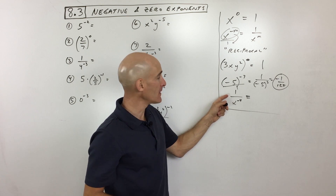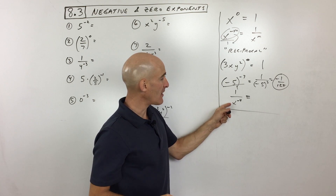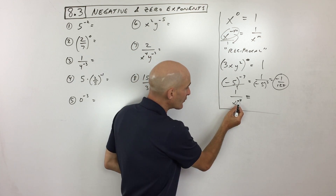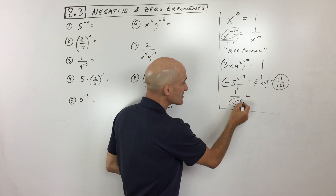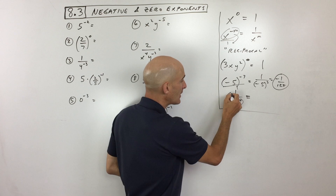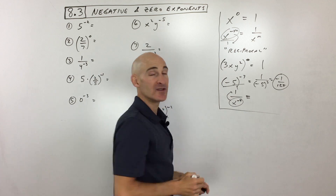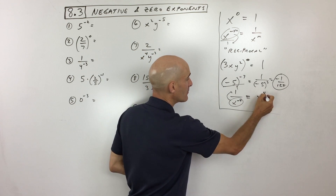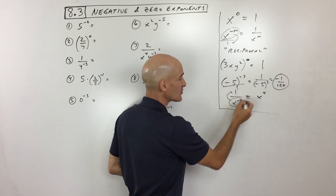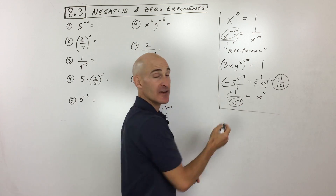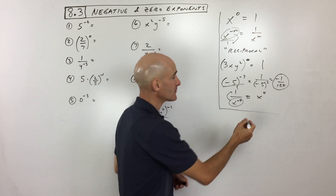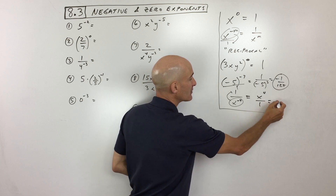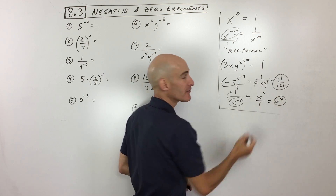For 1 divided by x to the negative 4 — remember, this negative exponent tells us to take that quantity and move it to the other side of the fraction bar. So that's going to be x to the positive 4. Once we take the reciprocal, we change that negative to a positive. You can think of this as over 1, but anything divided by 1 is just itself, so the answer is x⁴.